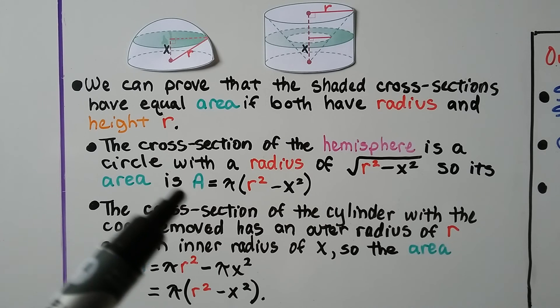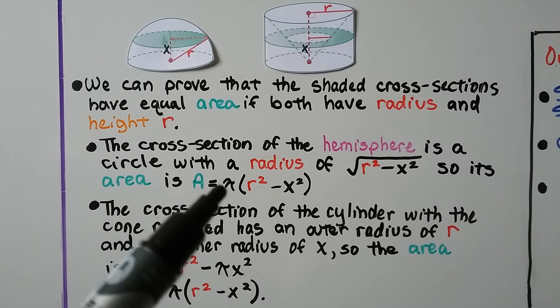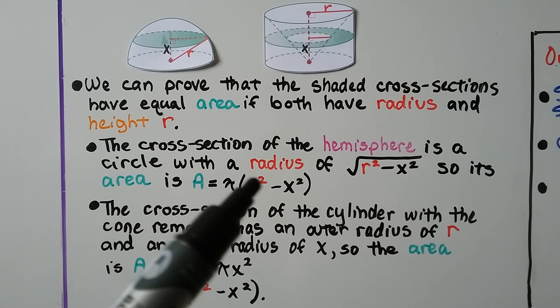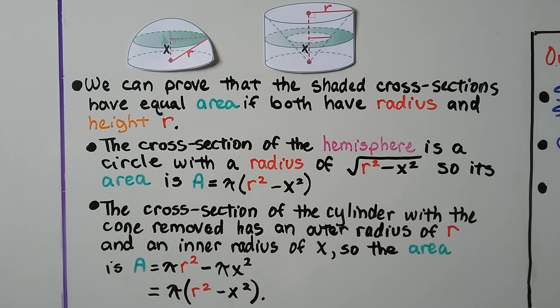It would be the square root of r squared minus x squared. So, its area is a equals pi times r squared minus x squared. And the cross section of the cylinder with the cone removed has an outer radius of r, right up here, see that?